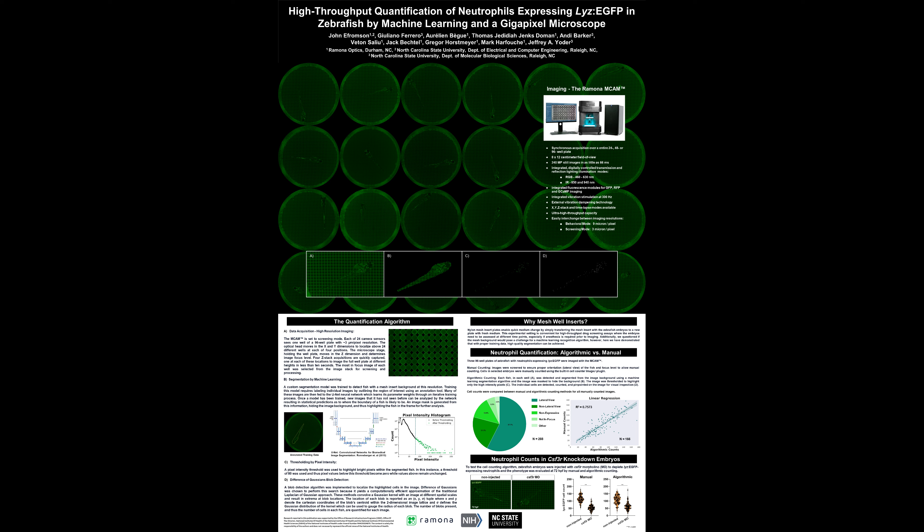A machine learning segmentation algorithm defines regions of interest around each fish, and standard image processing techniques are applied to further resolve the fluorescent cells of interest in this region. Three 96-well plates of zebrafish with neutrophils expressing Lise-EGFP were imaged with the MCAM. Images were screened to ensure proper orientation in the lateral view as well as focus level to allow manual counting. Cells in selected embryos were manually counted using an ImageJ plugin, and neutrophils in the same fish were also counted algorithmically, with a comparison made between manual and algorithmic counts.